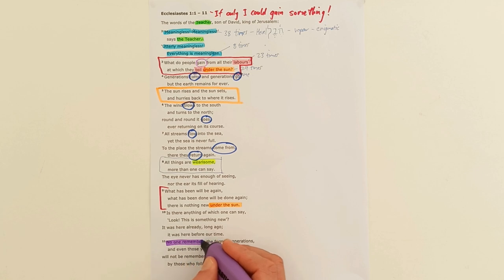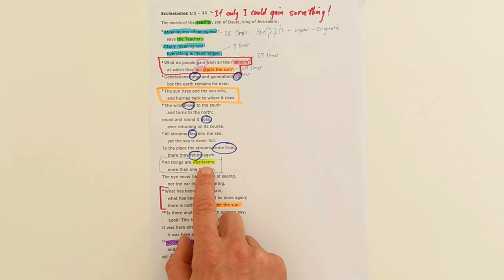At the end of this play and repeat life, no one remembers the former generation. They will not be remembered by those who follow them. It really does feel like Mr. Teacher—it's like a dreary Monday morning. He's just trying to make sense of life in this world, and he observes things under the sun, and it just leaves him feeling weary.